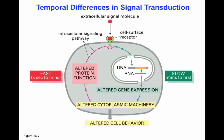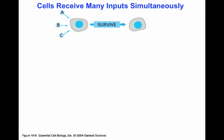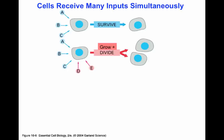Different signals can affect one cell, and the effect will depend on the combination of those signals and how they are interpreted. For example, a cell receiving signals A, B, and C gets a survival signal and continues living. Another cell receiving the same signals A, B, and C, but also signals D and E — which could be a protein, hormone, or steric hormone — will now have a brand new phenotype: instead of surviving, the cell is turned on to divide and grow.